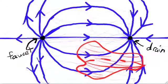This surface surrounds neither the faucet nor the drain. That means the total amount of water entering inward through the surface is equal to the total amount of water exiting outward through the surface. Thus the net flux through this surface is zero.